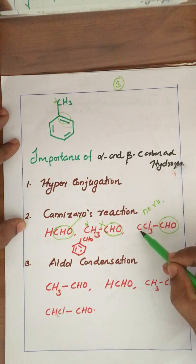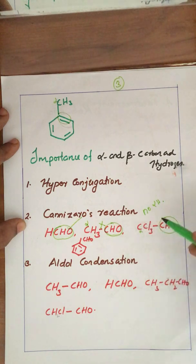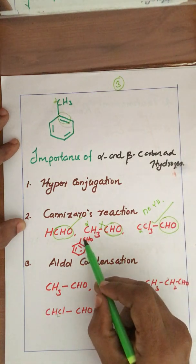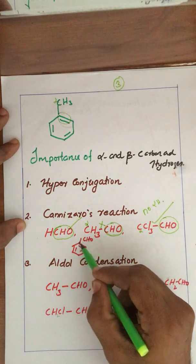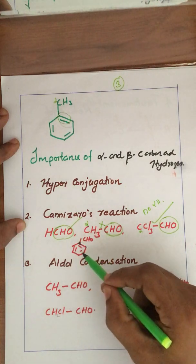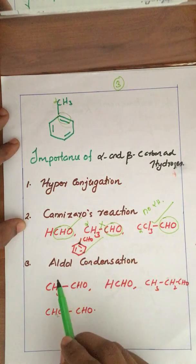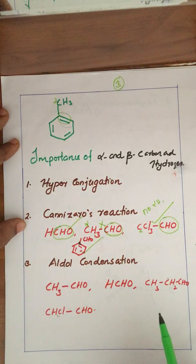In benzaldehyde (C6H5-CHO), the CHO group is the most important group. This is taken as the alpha carbon atom, but there is no alpha hydrogen, therefore it can undergo the Cannizzaro reaction. Similarly, for another aldehyde where CHO is the most important group and there is no alpha hydrogen, it can also undergo the Cannizzaro reaction.